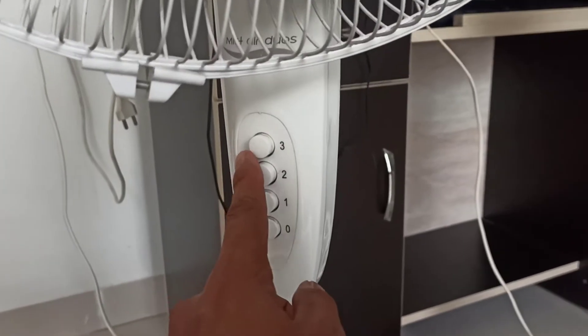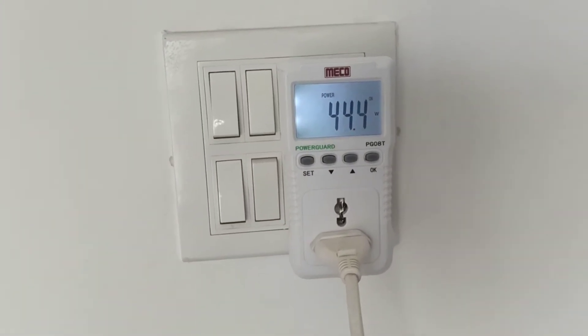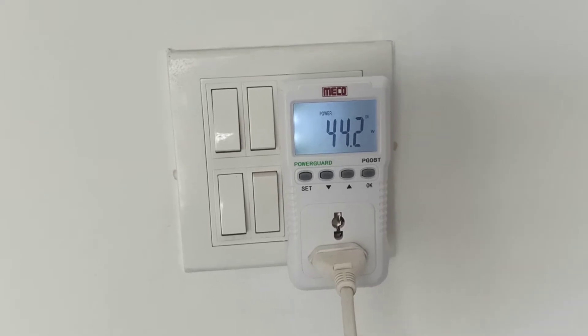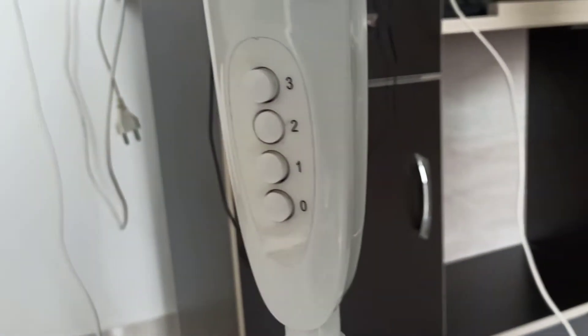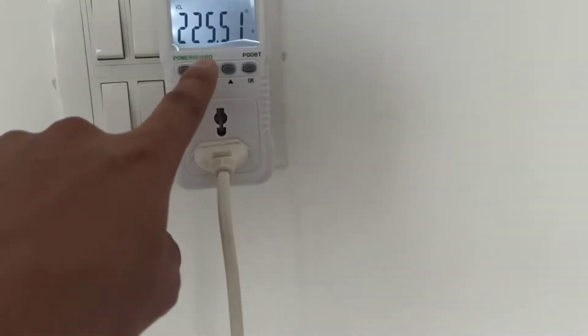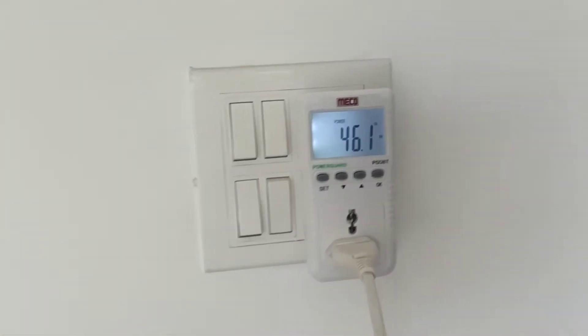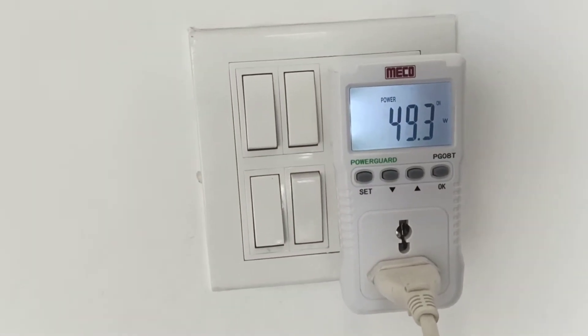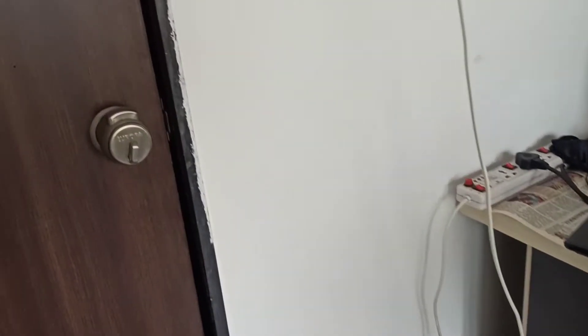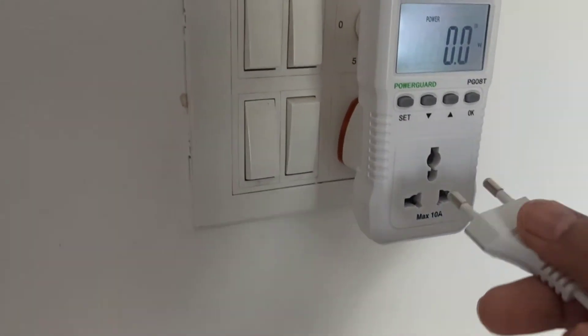Usha is reverse, so we have to try with speed 3 first, which is the slowest one—around 44 watts. Let's switch it up. At speed 2, it's 46 watts, and at the highest speed of 1, it is consuming around 49 watts. Now let's try Atomburg.